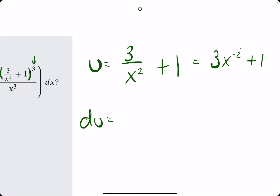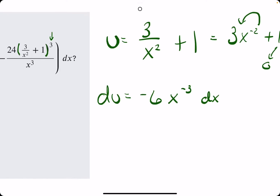Now we use the power rule. Negative 2 times 3 is negative 6. We leave the x. We subtract the exponent by 1 to get negative 3. And then the plus 1 goes to 0. We tack on dx, and we might want to rewrite x to the negative 3 as dividing by x to the positive 3.